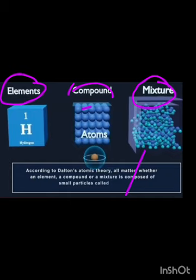Here we will define Dalton's atomic theory. According to Dalton's atomic theory, all matter — whether an element, a compound, or a mixture — is composed of small particles called atoms. This is called Dalton's atomic theory, as the name indicates.